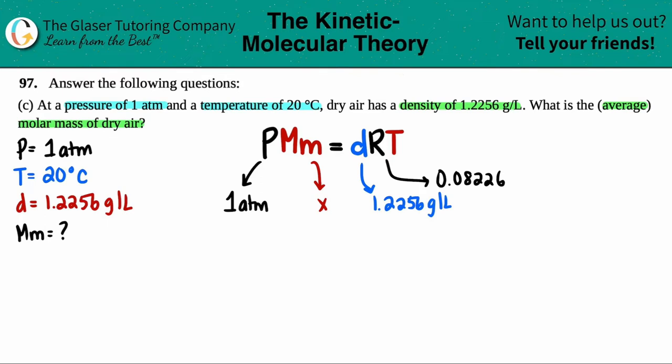Remember the R is that constant unit 0.08206, and remember the R units are atm times liter divided by mole times Kelvin. So that's why all of these have to have these specific units.